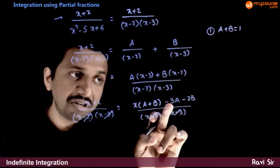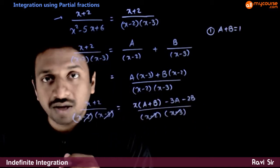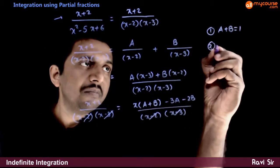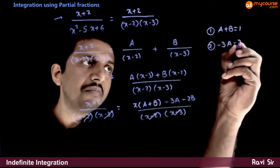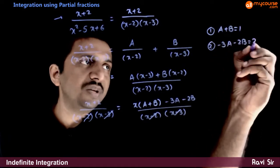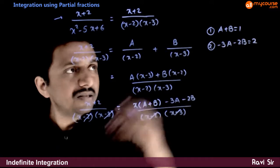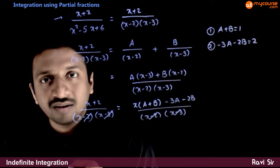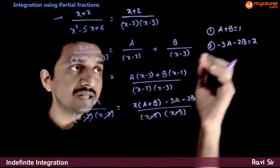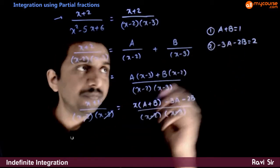The second condition is constant term should be same as the constant term. Minus 3a minus 2b has to be equal to 2. You have two linear equations.